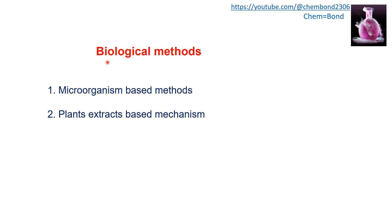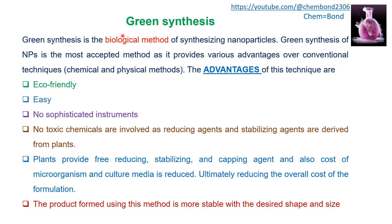Biological methods are classified into two categories. The first is the microorganism-based method, in which we use microorganisms such as bacteria, fungi, yeast, and algae. Certain enzymes present in their cells help in the formation of nanoparticles. The second method is the plant extract-based mechanism, where phytochemicals present in the plant extract aid in nanoparticle formation.